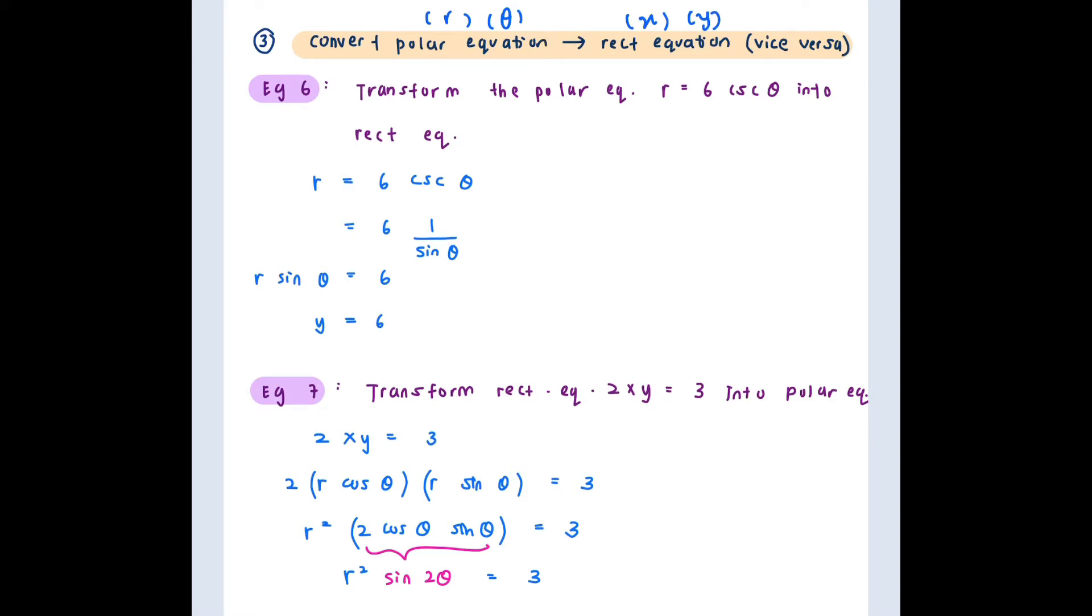Now let's see example 6. Transform the polar equation to rectangular equation. So obviously this is polar equation because you have R and theta. So let's rearrange this until we get rectangular equation. Let's open up. Cosecant is just 1 over sin theta and then let's cross multiply here. So you get R sin theta equal to 6.